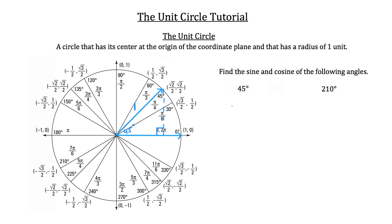Remember what you know about special right triangles? When you're dealing with a 45-45-90 special right triangle — I'll draw a little example over here — the 90-degree angle is here and the two other angles are 45 degrees each. The arbitrary values for the sides are x, x, and x times root 2. Compare that to our triangle here.